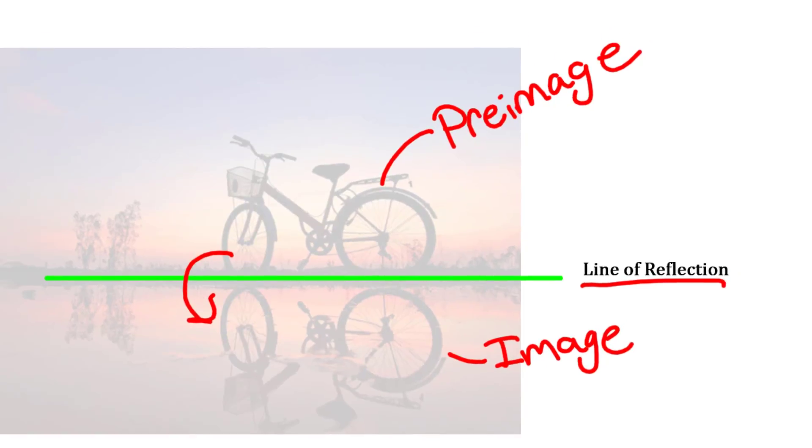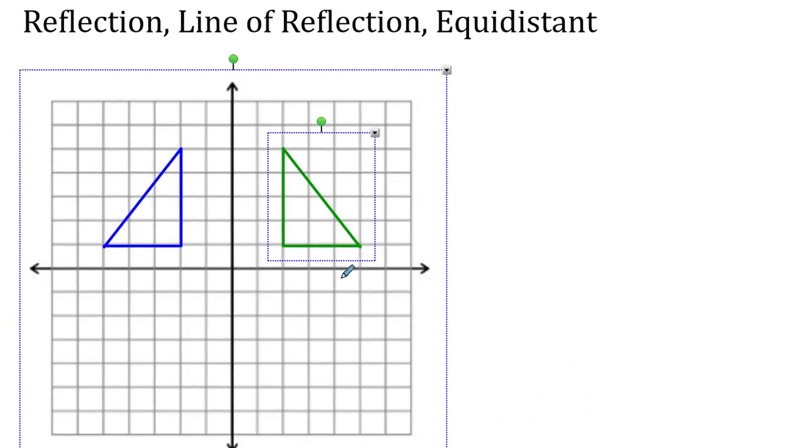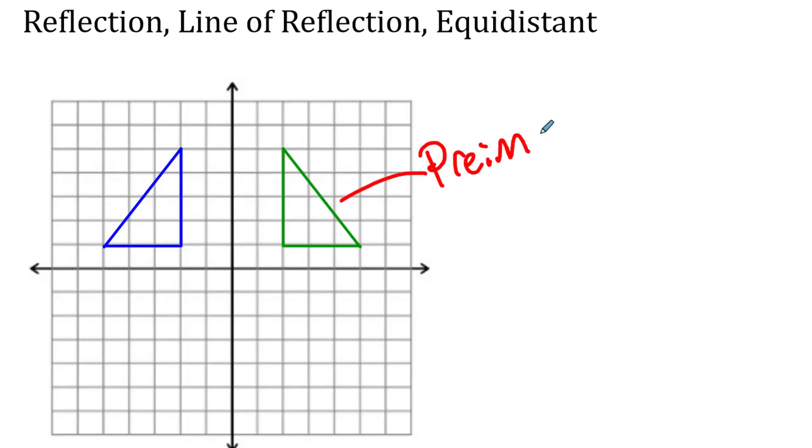So let's check it out in math here. If you have a piece of graph paper, and you got a coordinate grid, and you got some shapes. We have right here the pre-image, and then you got the image over here.